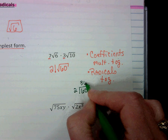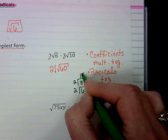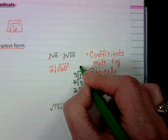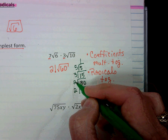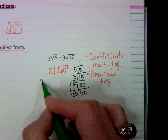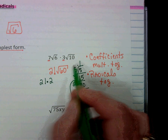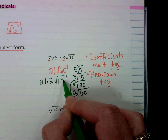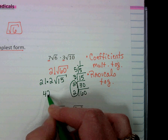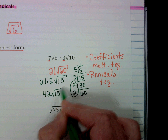Let's see. We get 2 and 30, 2 and 15, 3 and 5, 5 and 1. So we have a pair of twos that comes out, 21 times 2 with the 3 and the 5 left underneath. And so this is going to be 42√15.